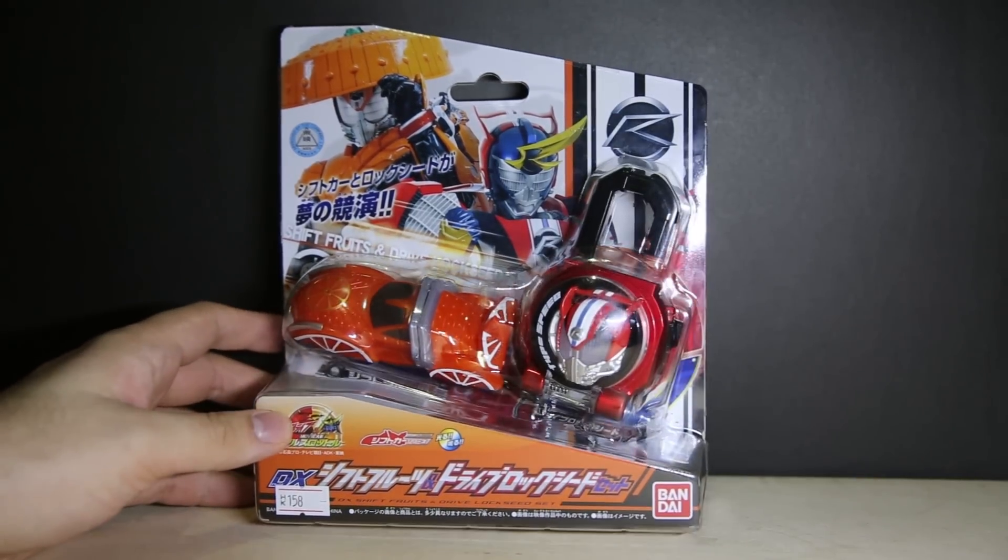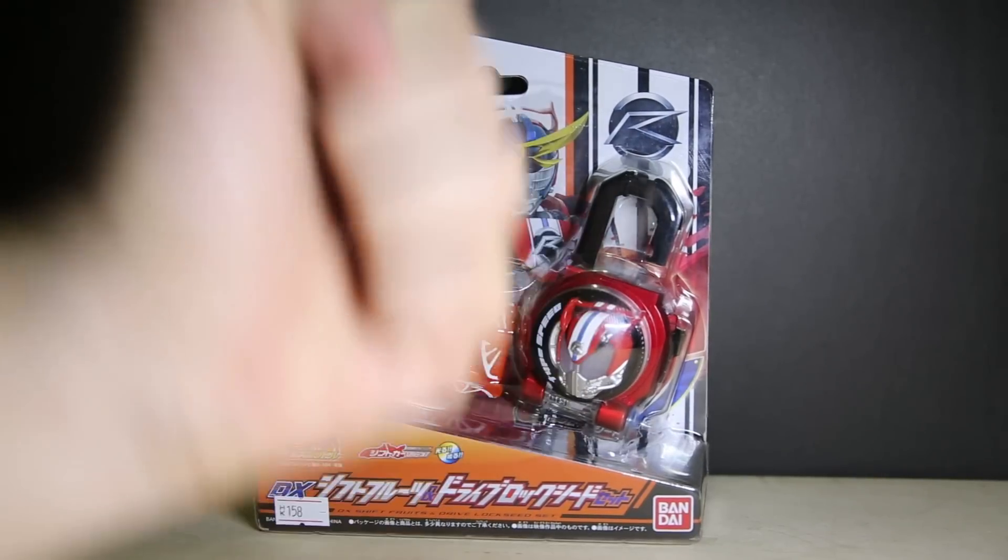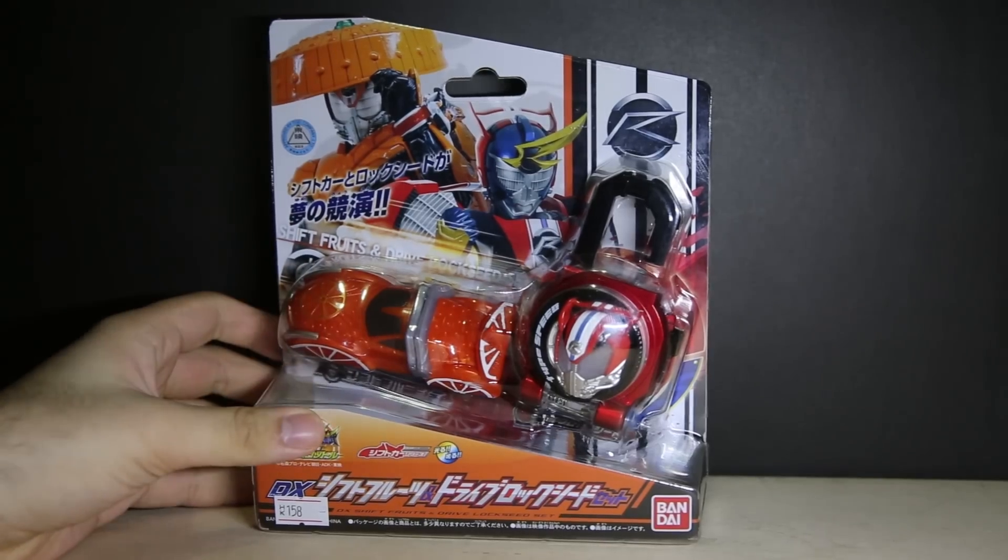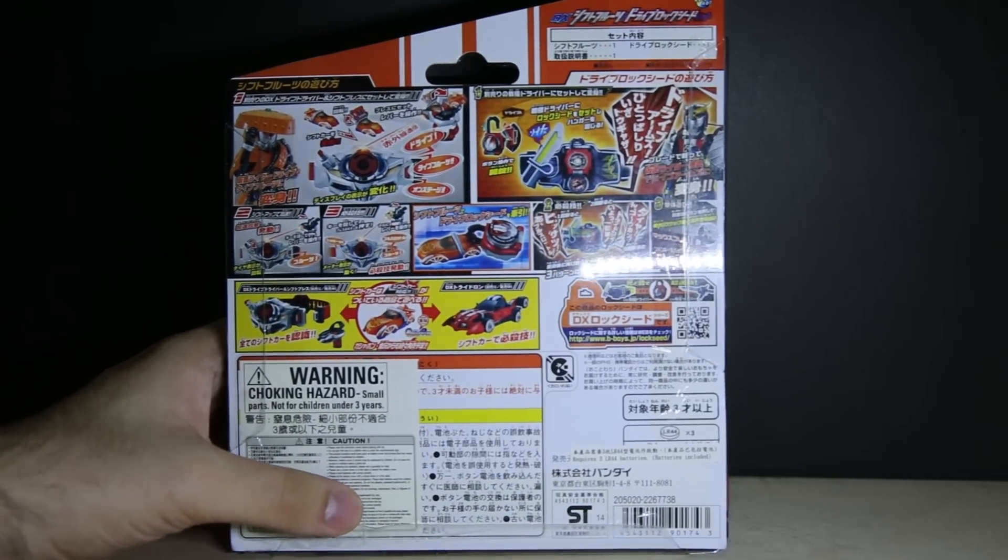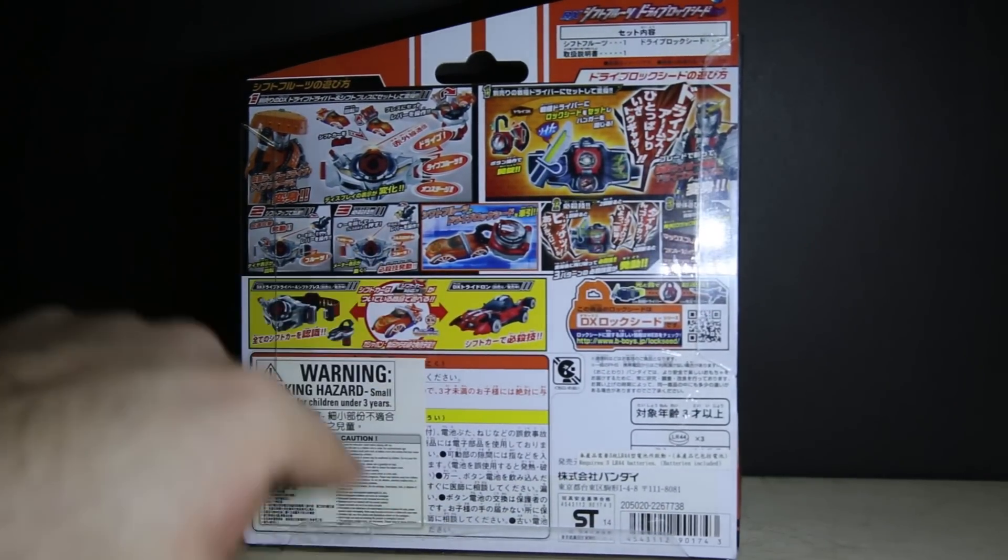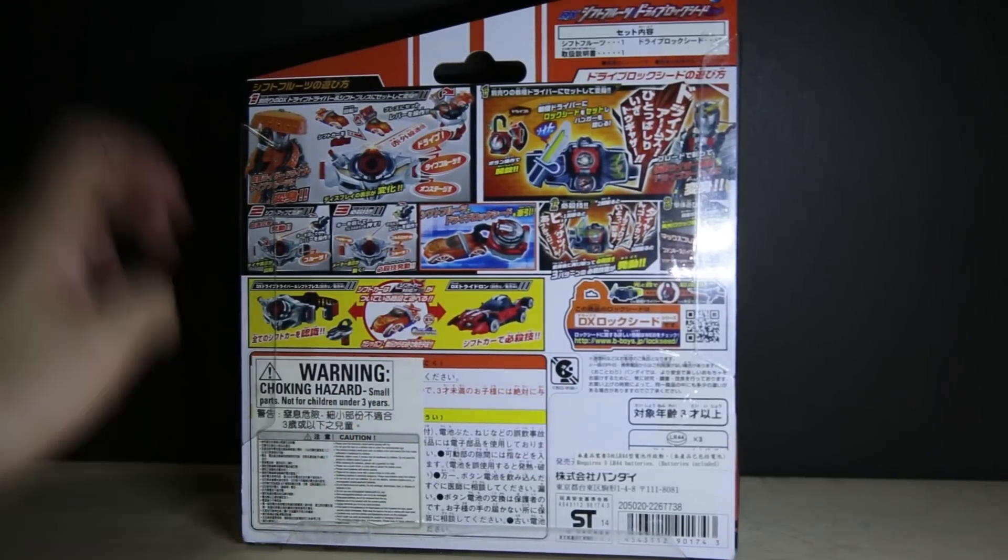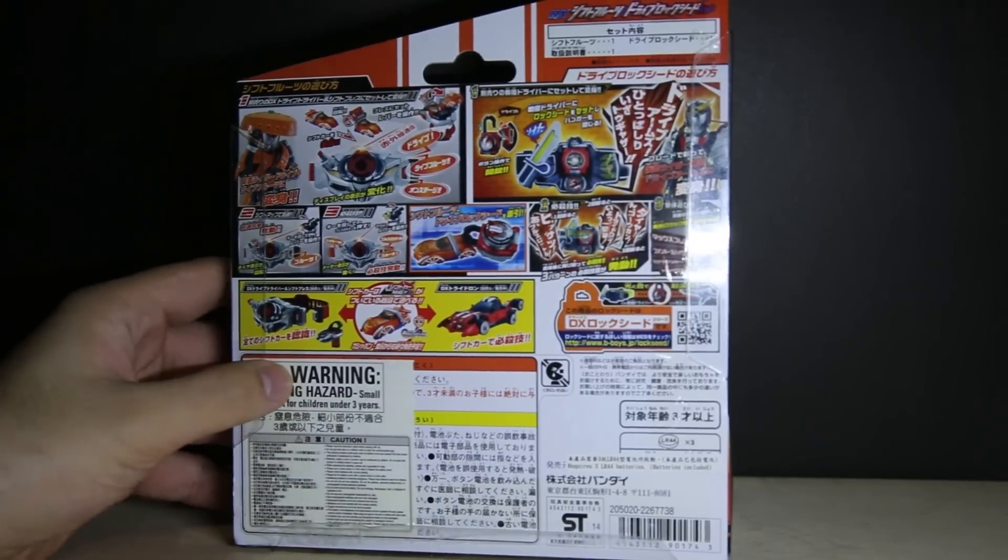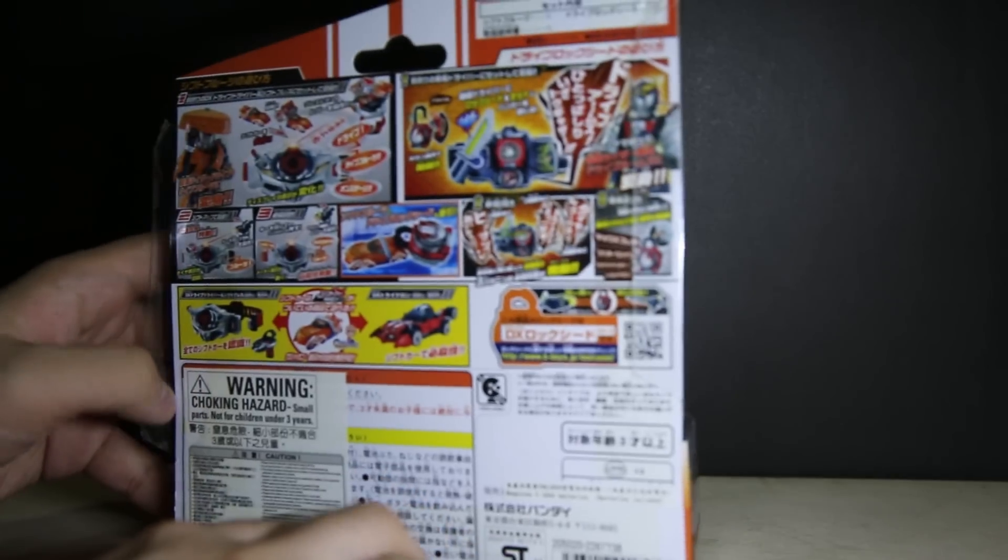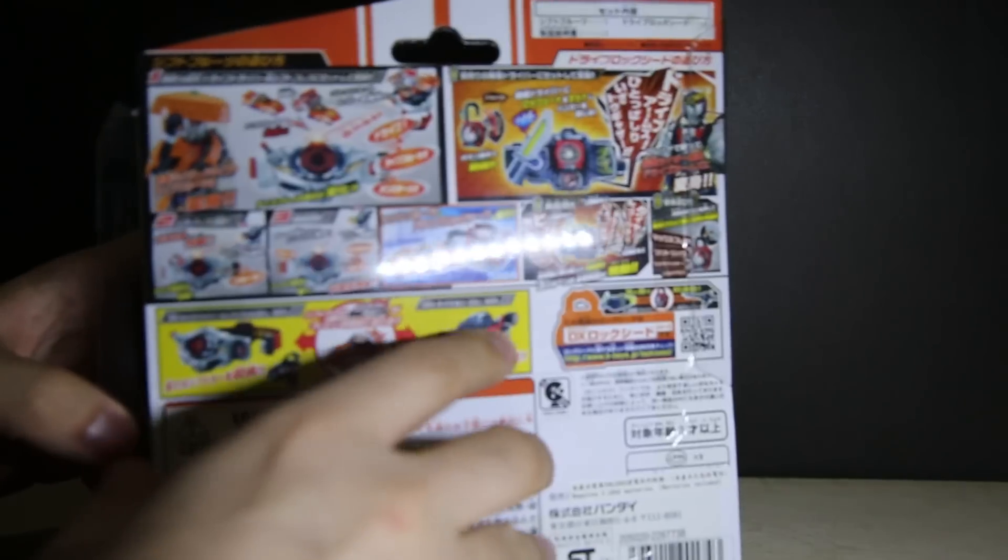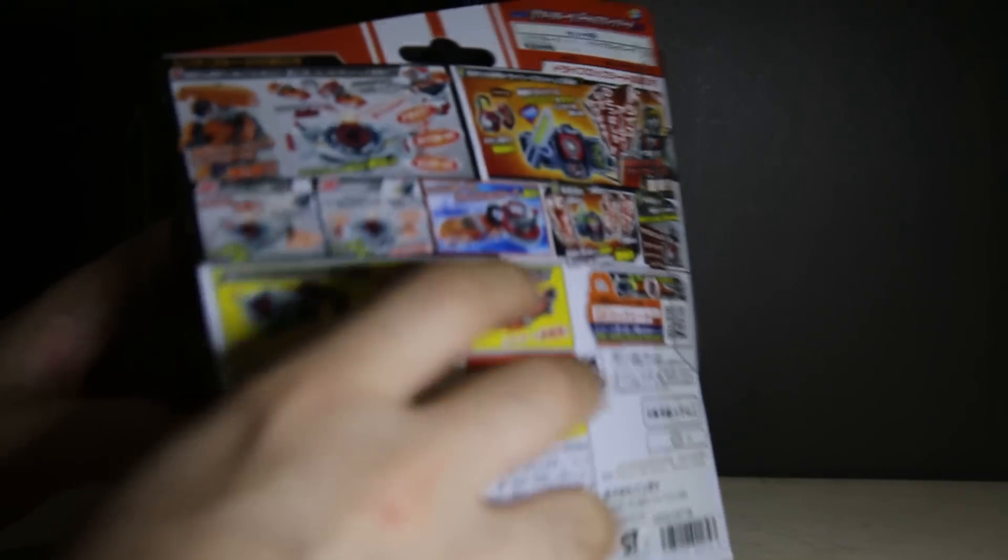Crappy box shape and waste of space and all that, so Bandai! Anyway, as usual, I've got a lot of information on the back and promotion of all the lock and users, the Shift Car and the Tridon and the different sounds that it makes. There's a Chinese sticker there because it's selling in Hong Kong. I'll pull this out.